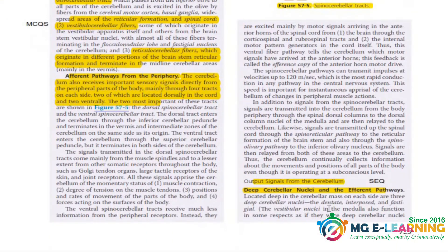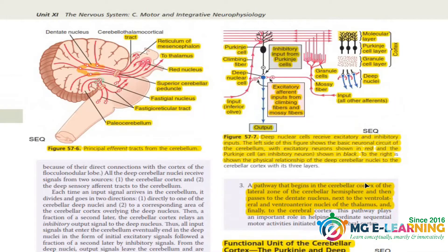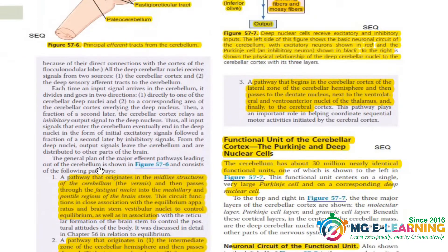Then the deep cerebellar nuclei and the efferent pathways — efferent pathways are also very important. This is the diagram showing efferent pathways and this is also a very very important diagram; you have to do all these diagrams in this chapter. The blue box explains all the efferent pathways — you have to do this.